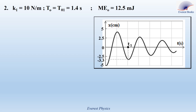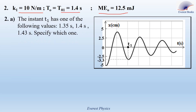Now let's study the damped oscillations of the first oscillator. In reality, block B1 of pendulum A is subjected to a friction force. The curve represents the abscissa of the center of mass of B1 as a function of time. Given that the mechanical energy at t equals 0 is ME0 equals 12.5 mJ, K1 equals 10 N/m, and the natural period is 1.4 seconds (from part 1a). Question 2a: T1 has one of the values 1.35 s, 1.4 s, or 1.43 s — specify which one.